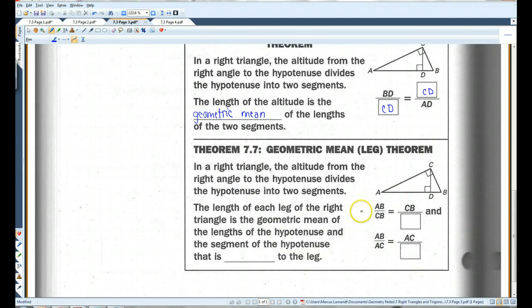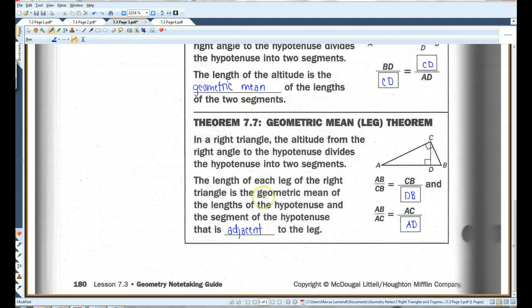Also, in a right triangle, the altitude from the right angle to the hypotenuse divides the hypotenuse into two segments. The length of each leg of the right triangle is the geometric mean of the lengths of the hypotenuse and the segment of the hypotenuse that is adjacent to the leg. So AB over CB equals CB over DB. And AB over AC equals AC over AD.